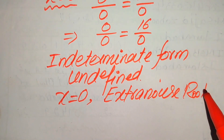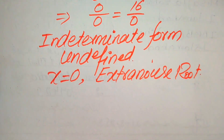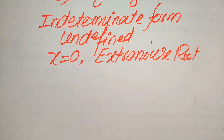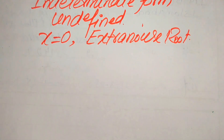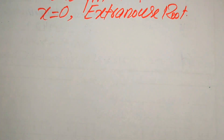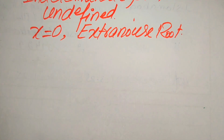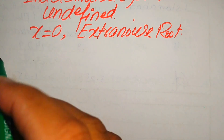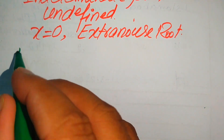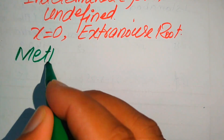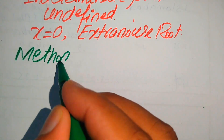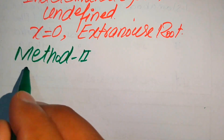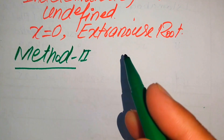To clarify: a root that satisfies the given equation is called a solution, while a root that does not satisfy the given equation is called an extraneous root.